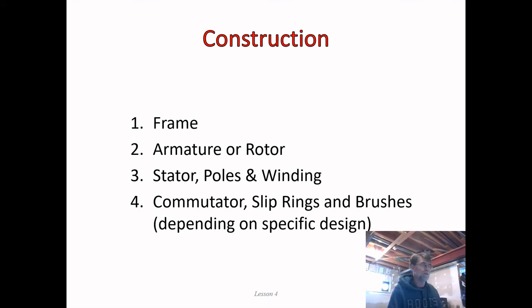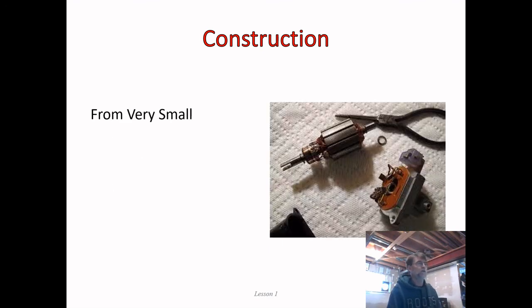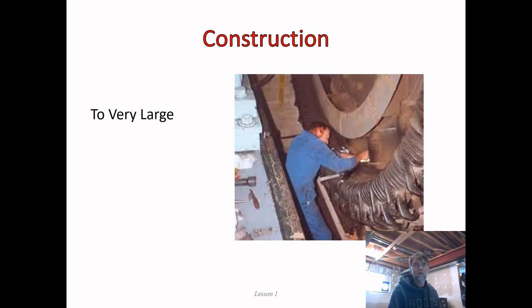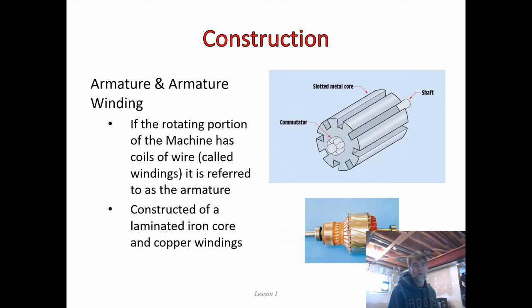The frame is exactly what you'd expect — sometimes called the chassis or the yoke. This is the physical construction of the motor or generator; it includes dimensions, so we could be talking about a machine that is extremely tiny or one that is extremely large. But whether it's small or great big, the same basic principles and construction still apply.